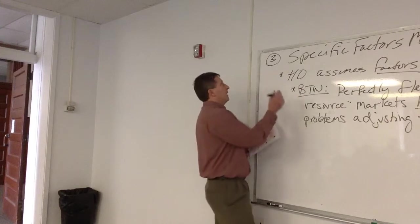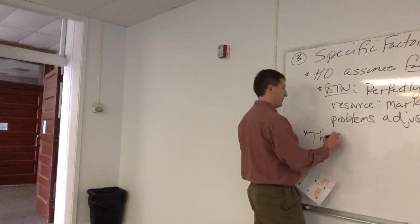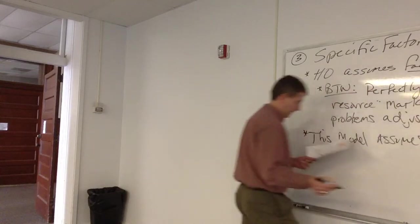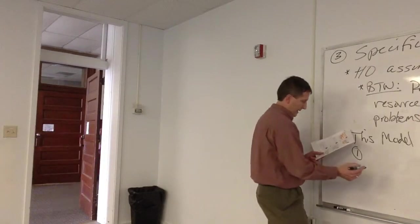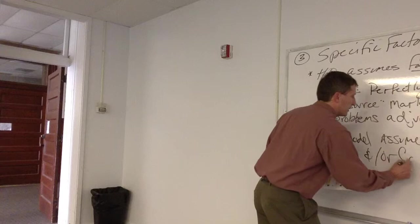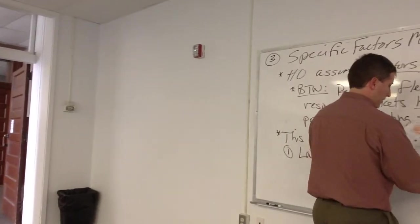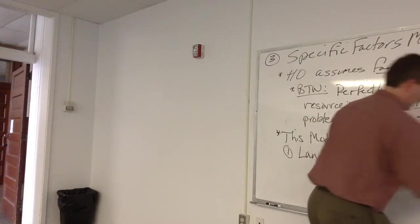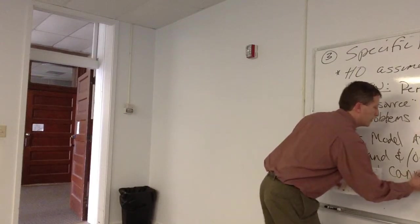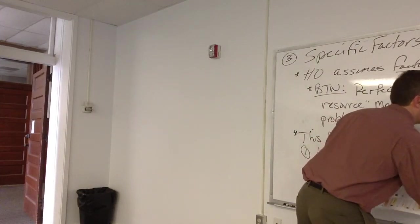Okay. So this model, specific factors model, this model assumes, number one, land and capital, land and or capital are immobile and cannot migrate. These are the specific factors.